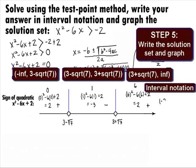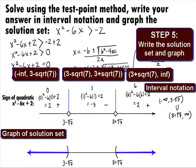In Step 5, we need to write the solution set and graph this. Since we are not including where it's equal to 0, this will be an open interval using curved ends. Our final answer in interval notation is the open interval of negative infinity to 3 minus square root of 7, union with the open interval of 3 plus square root of 7 to infinity. The graph will have a curved end at 3 minus square root of 7 with shading to the left, and a curved end at 3 plus square root of 7 with shading to the right.